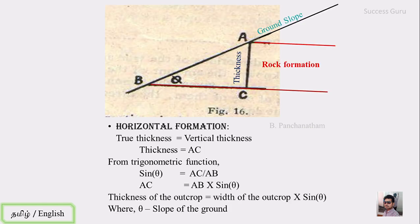So if we calculate the width of the outcrop, we can find the true thickness. For example, the width of the outcrop is 25 m.